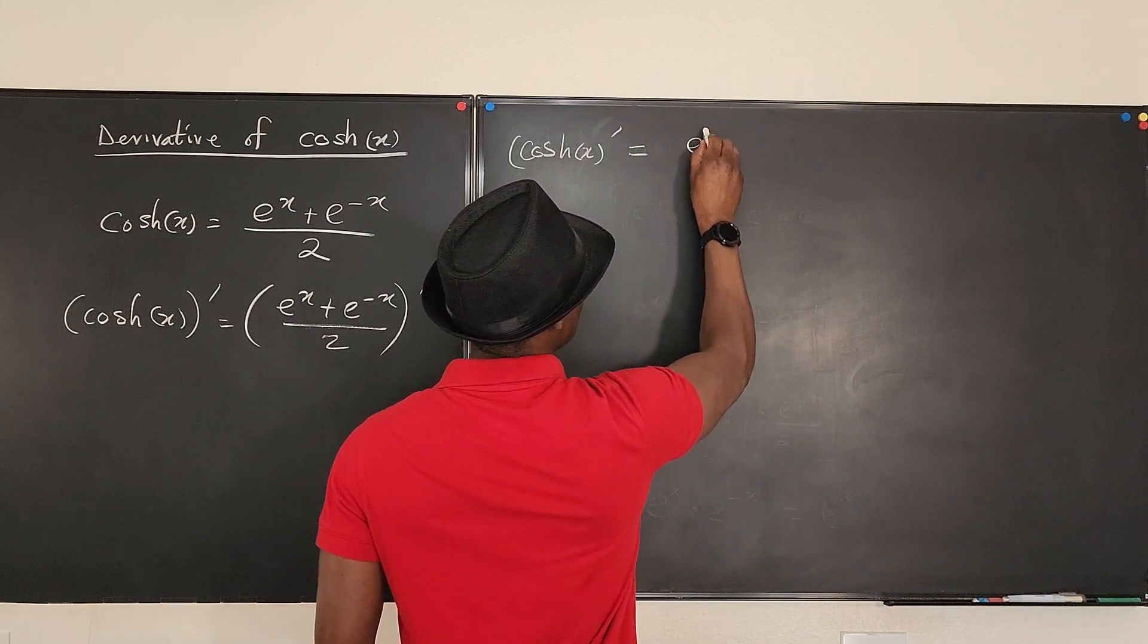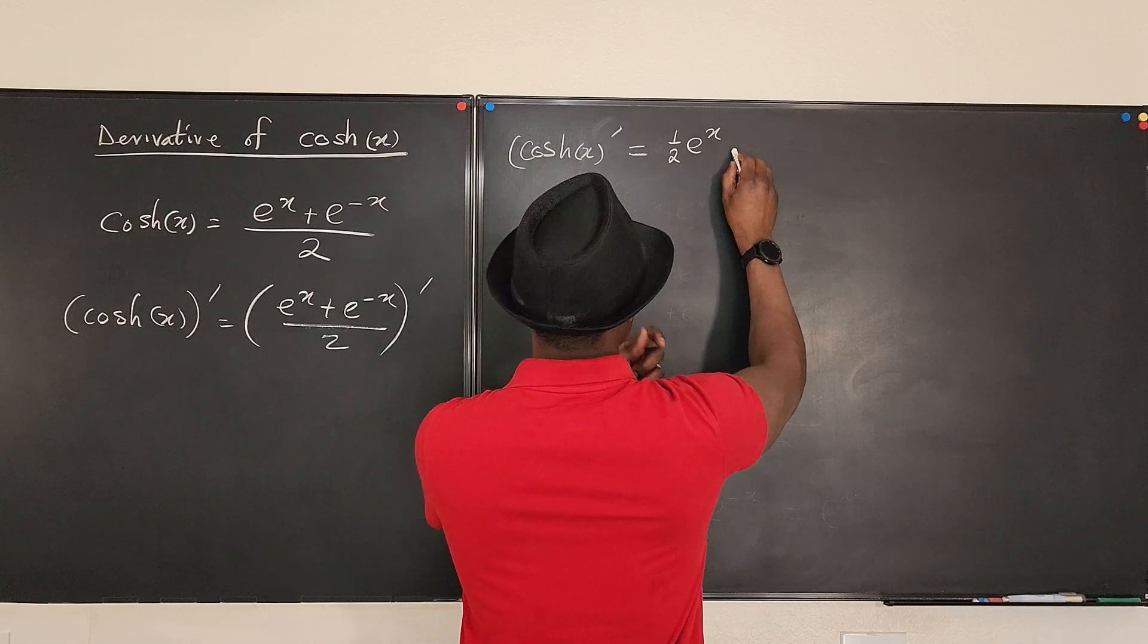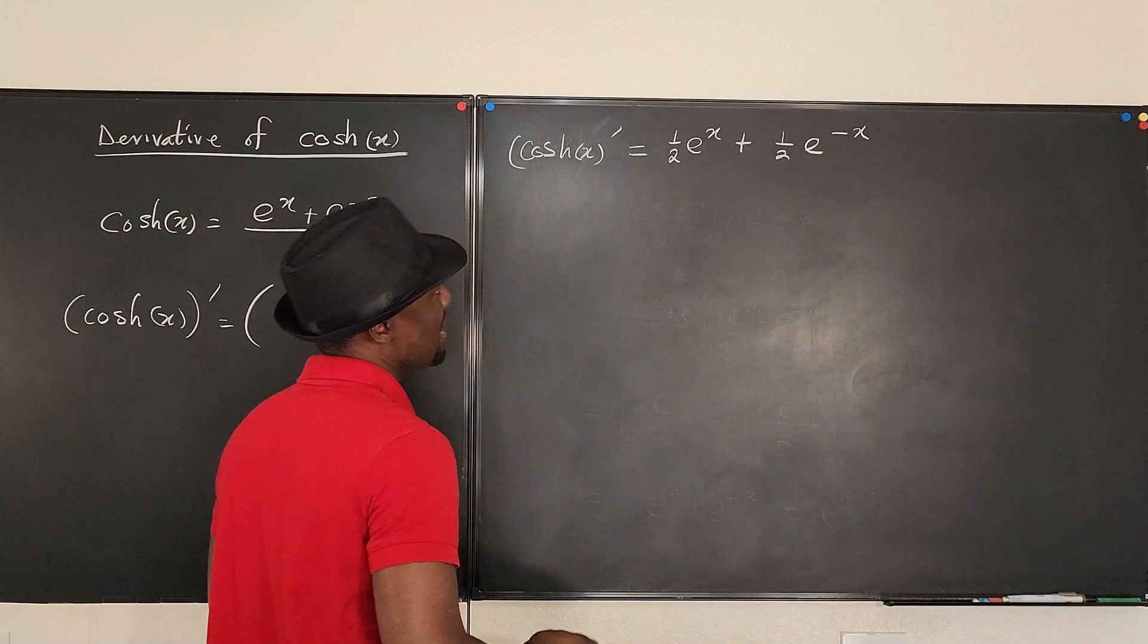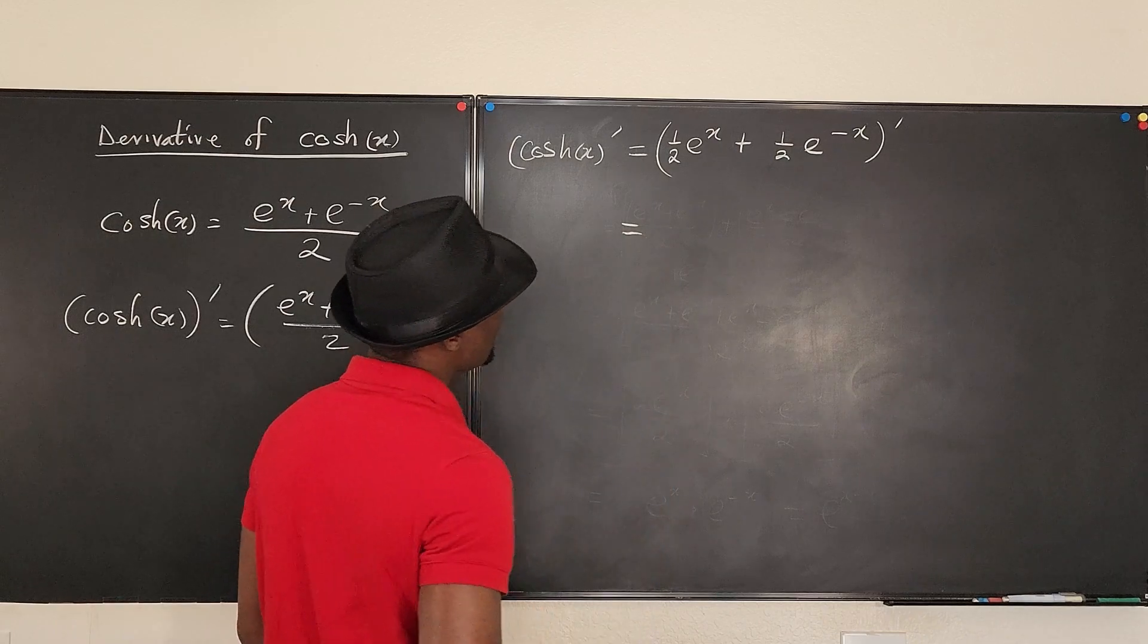It's going to be e^x. Let's write it this way: half e^x plus half e^(-x). I don't need to repeat the halves actually, but just for simplicity, I like to do that.